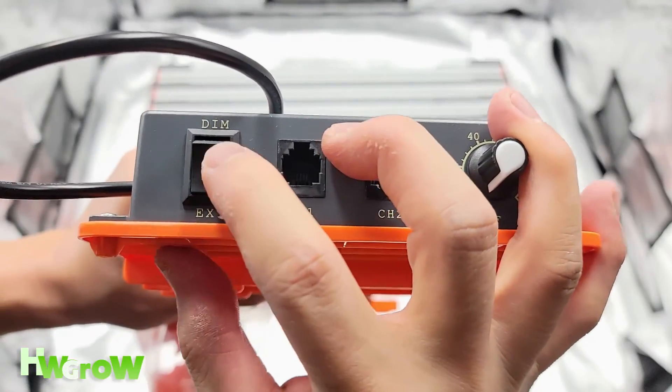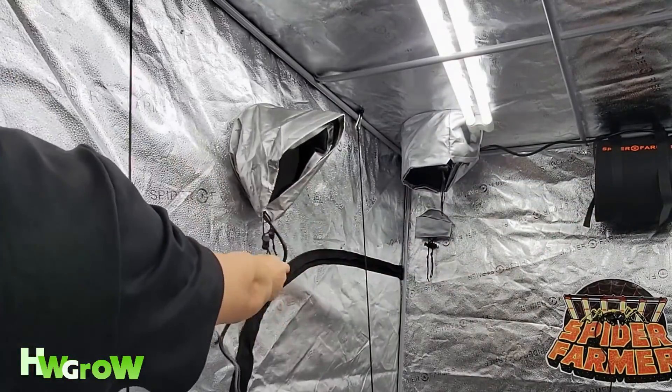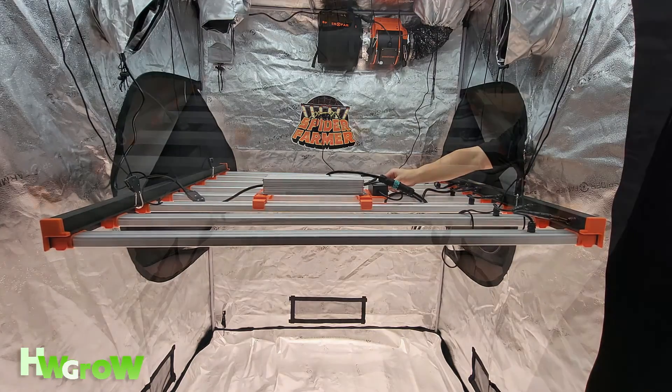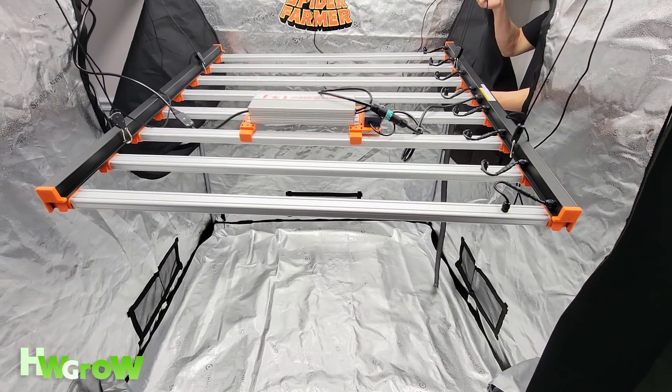At last, make sure the light is on the OFF position, then plug the light into a power outlet, turn it on, and brighten and lift it to your liking. That's all with this setup.